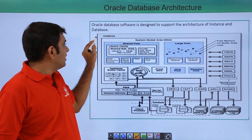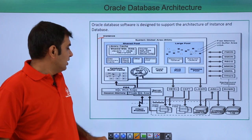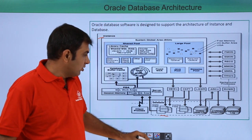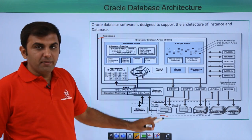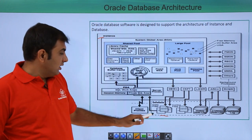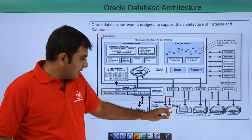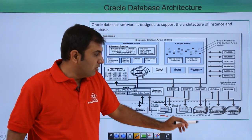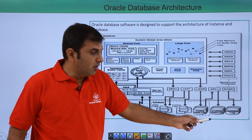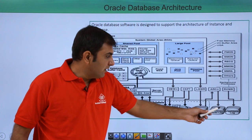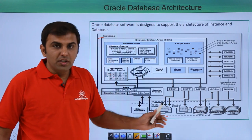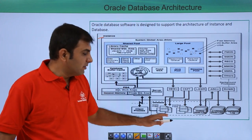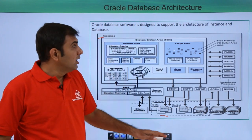This is your instance, and this is your database. The database consists of physical files like data files, control files, online redo log files, archive log files, flashback logs, and redo log files — these are your database physical files.